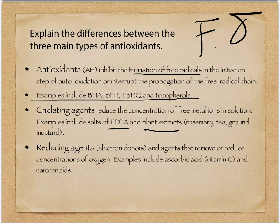Finally, the third type are reducing agents — things that donate electrons or remove concentrations of oxygen. To inhibit oxidation, we have to remove the concentrations of oxygen. Those are things like vitamin C and carotenoids that we've talked about earlier.